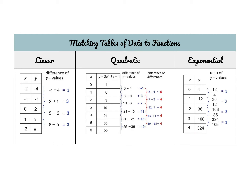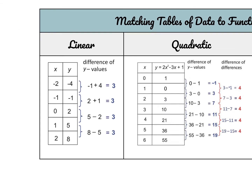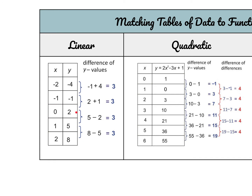We're going to be looking at things that are either linear, quadratic, or exponential. From a table of values, you can tell if something is linear if there is a common difference in the Y-values. You have to make sure the intervals for your X-values are consistent — here they're all increasing by 1. So you look at the difference in Y-values: from here to here you're adding 3, and since that's consistent, this is best modeled with a linear function.